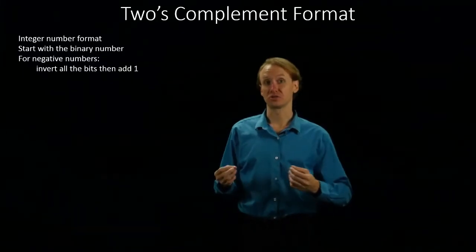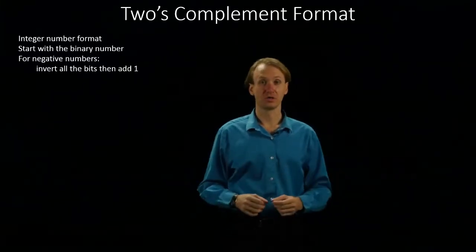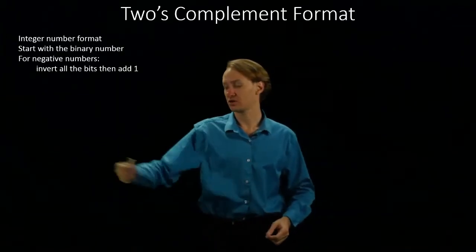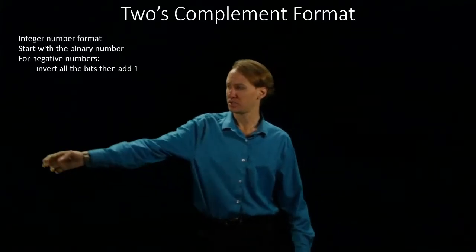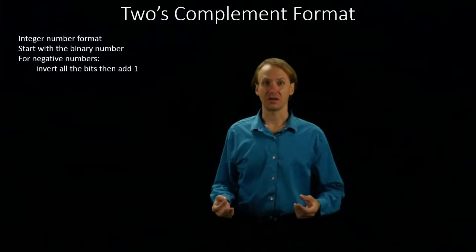Our positive numbers are still really easy. You just write down the positive number using however many bits you've got. Again, it will have lots of zeros on the left-hand side, and we'll use the most significant bit as an implicit sign bit.